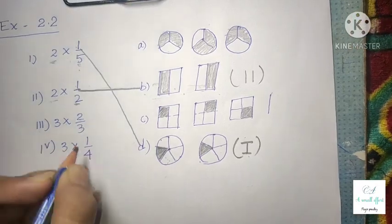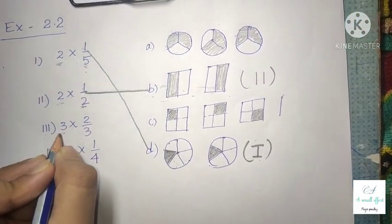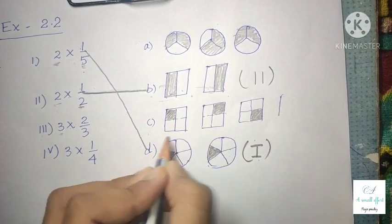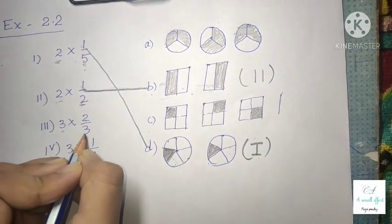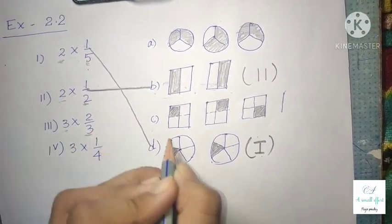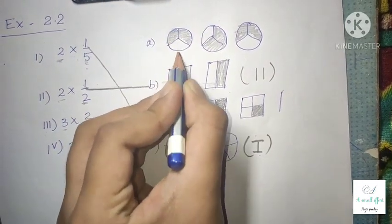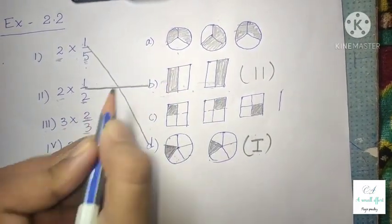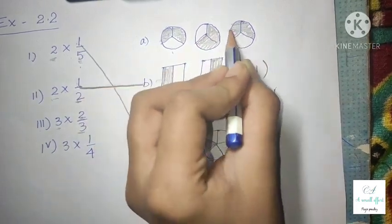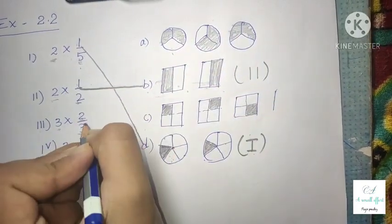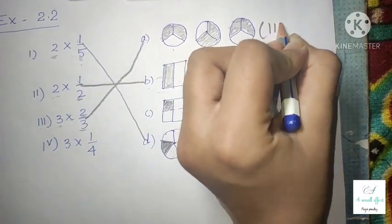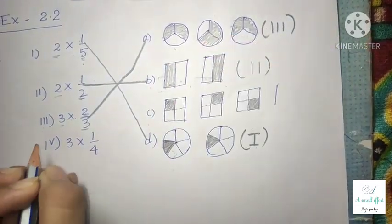Option 3 is 3 × 2/3. This means the option should have 3 figures — options A and C have 3 figures. The denominator is 3, meaning 3 equal parts should be there, and the numerator is 2, meaning 2 equal parts are shaded. So option 3 is matched with option E.